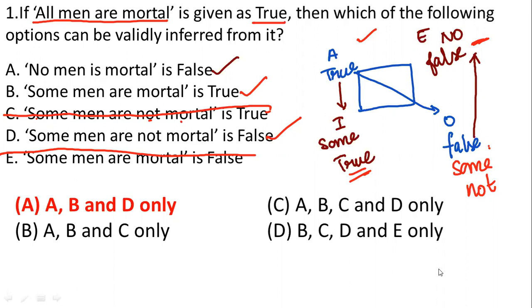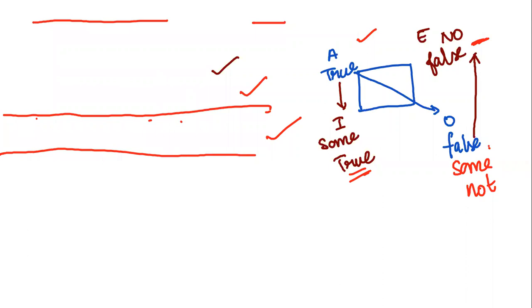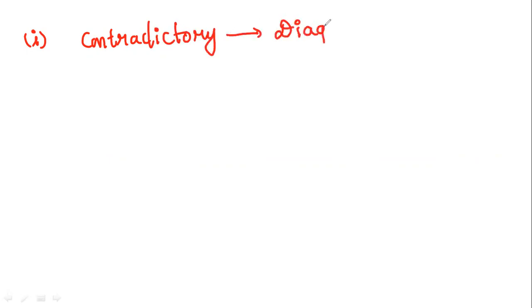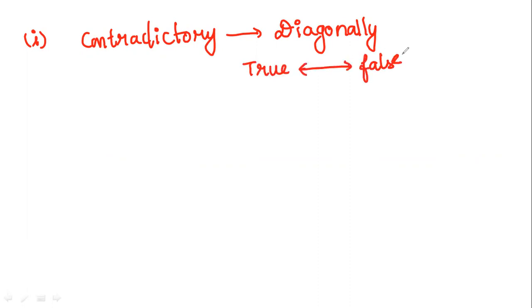So how do we solve this? Only two shortcuts you are going to learn. The first shortcut is contradictory. Diagonally opposite statements are involved in contradictory relationships. If one becomes true, the other will automatically become false. If one becomes false, the other will automatically become true. This is the contradictory relationship — the first shortcut you are going to apply for any question.